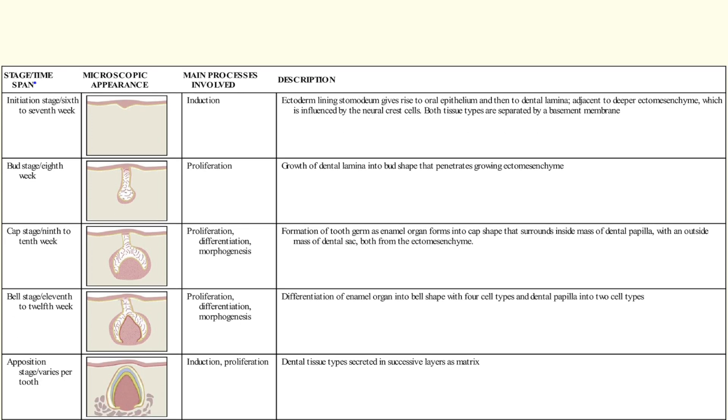The appositional stage shows the formation of the dentin and enamel matrices on which future calcification can occur. The primary mechanisms involved are induction and proliferation.